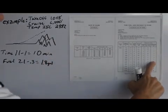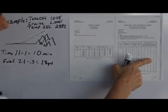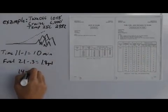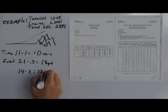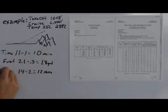And then distance traveled, it says that we would have traveled about 14 miles minus the 2, so it says we would have traveled a total of about 12 nautical miles as we were climbing to our 6,500.